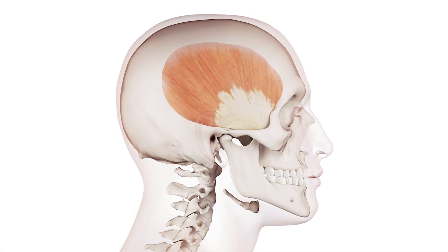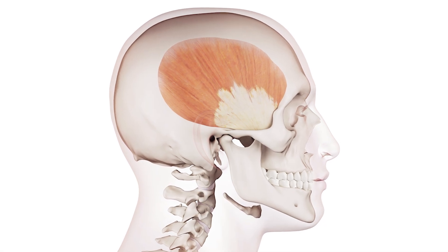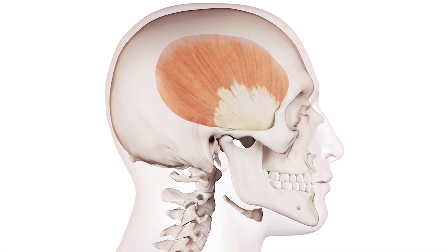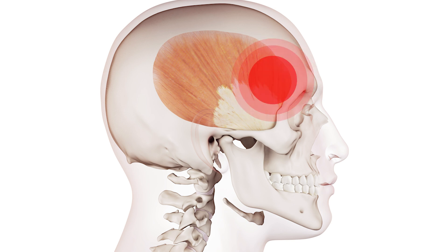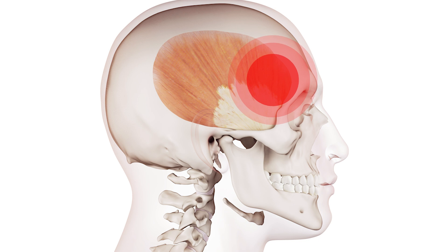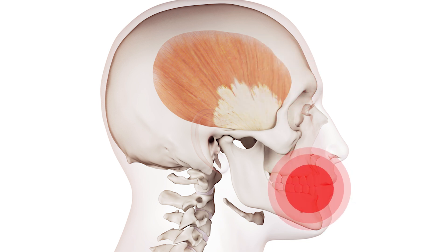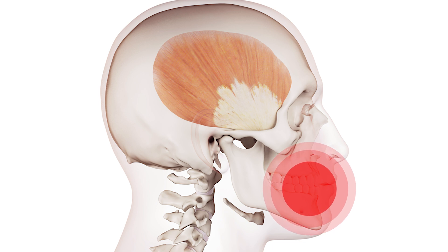Now look at the triggers — there are four sets of triggers. The first is right in the front of the muscle here, and this will refer pain in two places: the first up here around the trigger and forward into the temporal area. It also refers pain down into the teeth at the front.